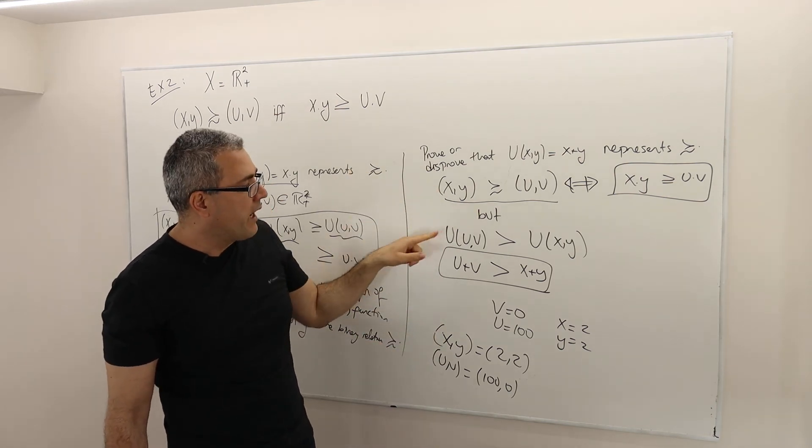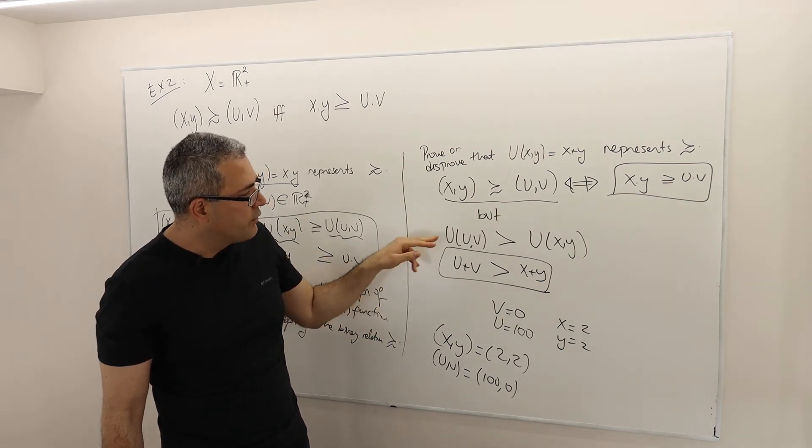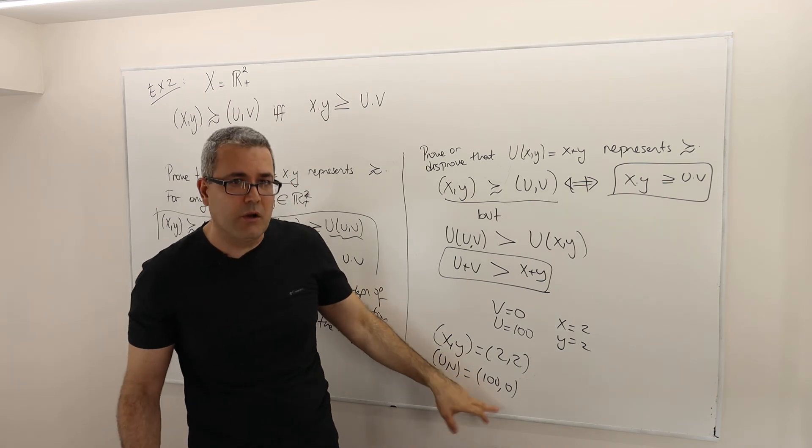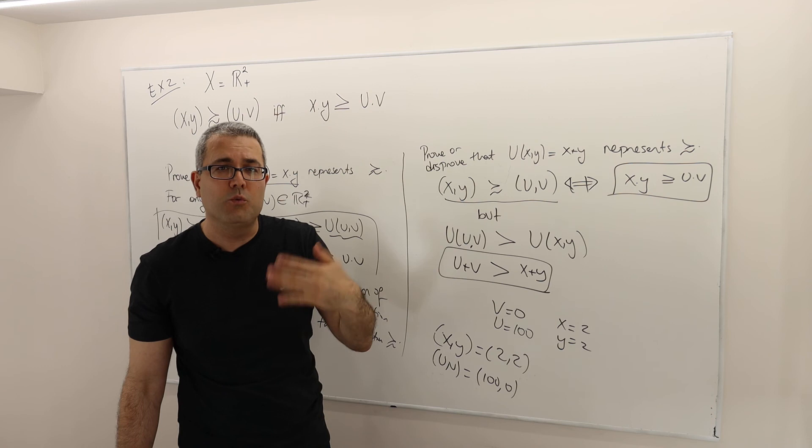But when I look at the utility values of U, V and X, Y, the utility of U, V is 100 plus 0, which is 100. And the utility of X, Y is 2 plus 2, which is 4.